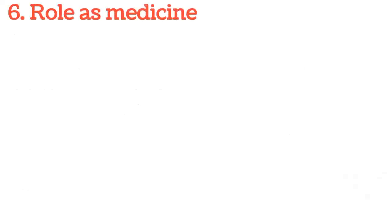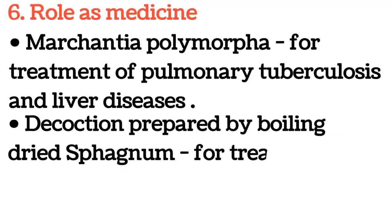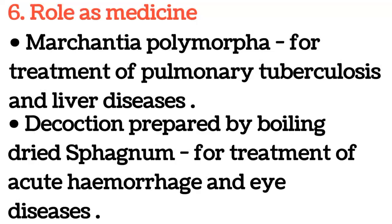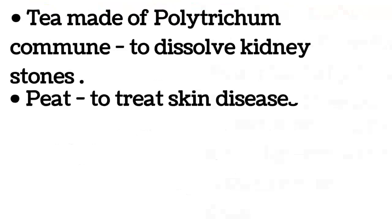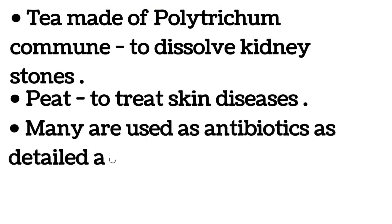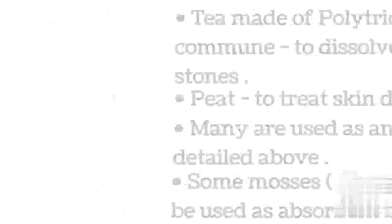Six: role as medicine. Marchantia polymorpha is used for treatment of pulmonary tuberculosis and liver diseases. Decoction prepared by boiling dried sphagnum is used for treatment of acute hemorrhage and eye diseases. Tea made of Polytrichum commune to dissolve kidney stones. Peat is used to treat skin diseases. Many are used as antibiotics as detailed above. Some mosses and sphagnum can be used as absorbent bandages in hospitals in place of cotton.